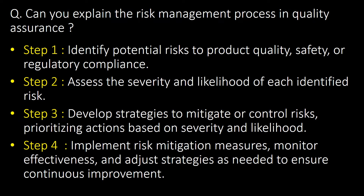Can you explain the risk management process in quality assurance? There are four steps: Step one — identify potential risks to product quality, safety, or regulatory compliance. Step two — assess the severity and likelihood of each identified risk. Step three — develop strategies to mitigate or control risk, prioritizing actions based on severity and likelihood. Step four — implement risk mitigation measures, monitor effectiveness, and adjust strategies as needed to ensure continuous improvement.